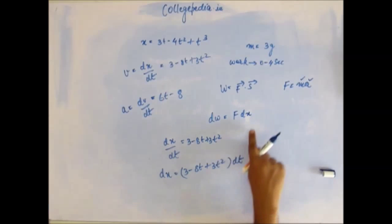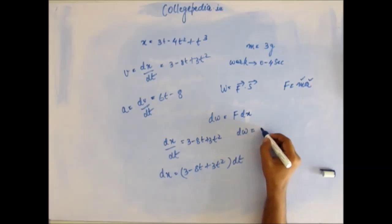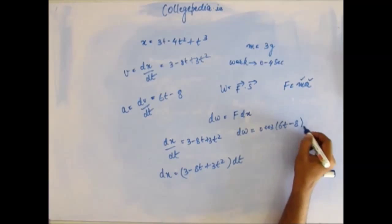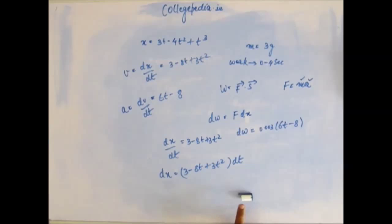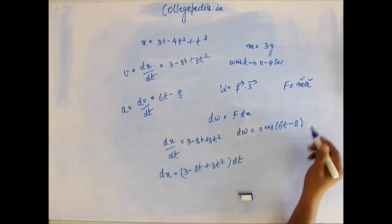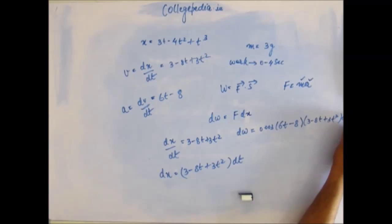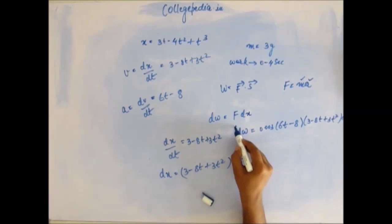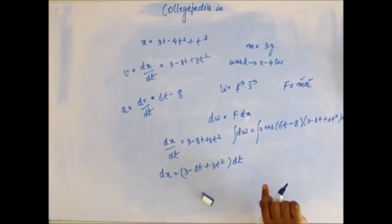So now you have dx, you just put dx here. Small work will be force, this is instantaneous force, 0.003 (mass) into acceleration (6t minus 8), this is the instantaneous force into small displacement. Small displacement dx is 3 minus 8t plus 3t squared into dt. This is the small amount of work done. The total work done would be integration of this, and you just want to integrate this using proper limits. You have integration in terms of dt, so the limit that you will put is that of t, which is 0 to 4 seconds.